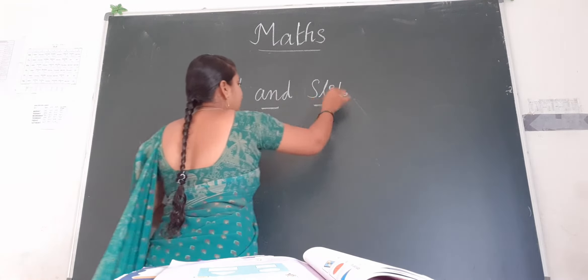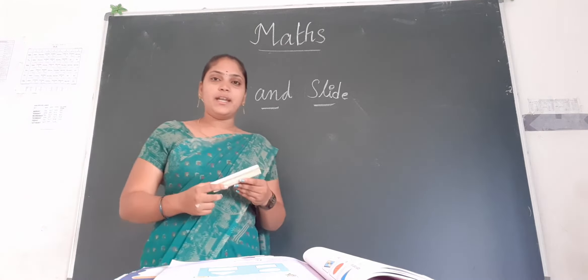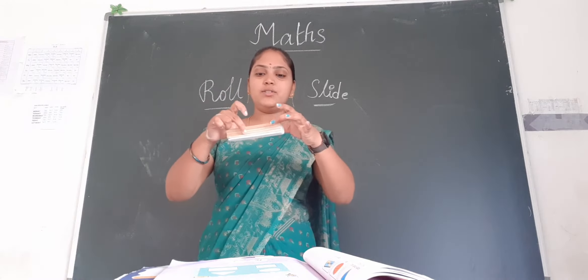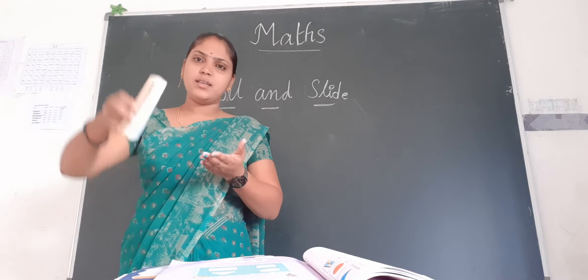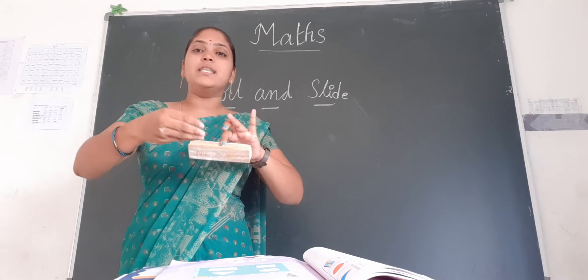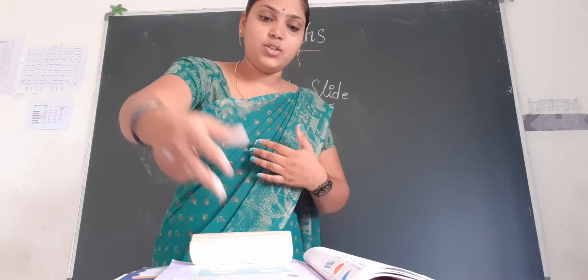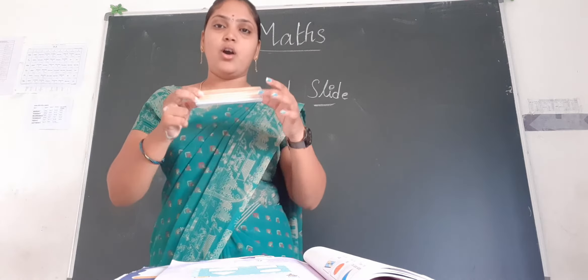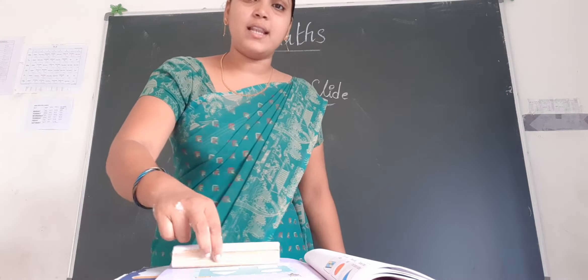Objects that have a flat surface can slide. If you observe these objects here — is this a flat surface? Yes, it is a flat surface. So this type of object can slide. Is it roll? No. Why? Because this does not have a curved surface. Objects that have a flat surface slide, like this.